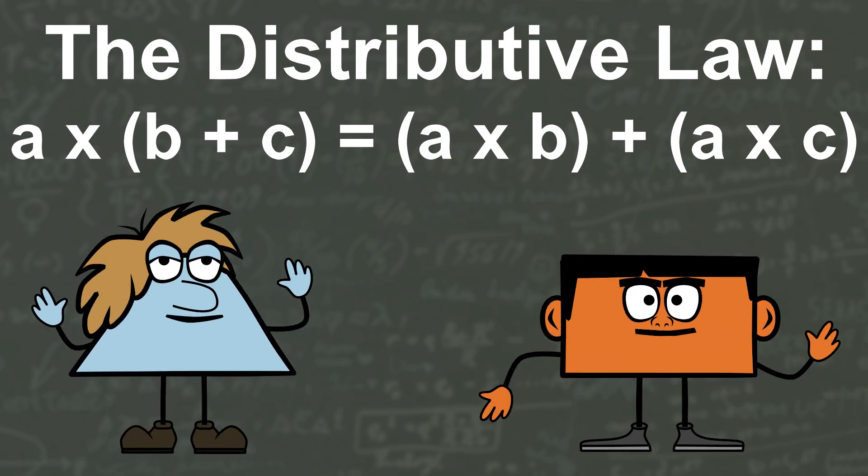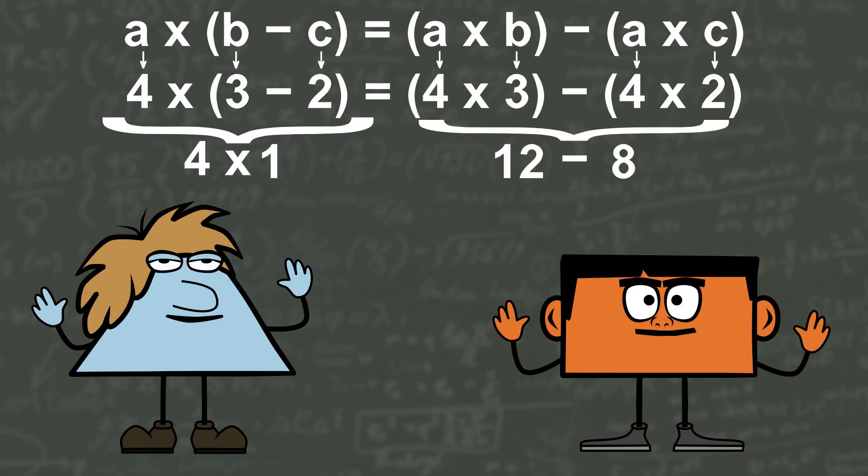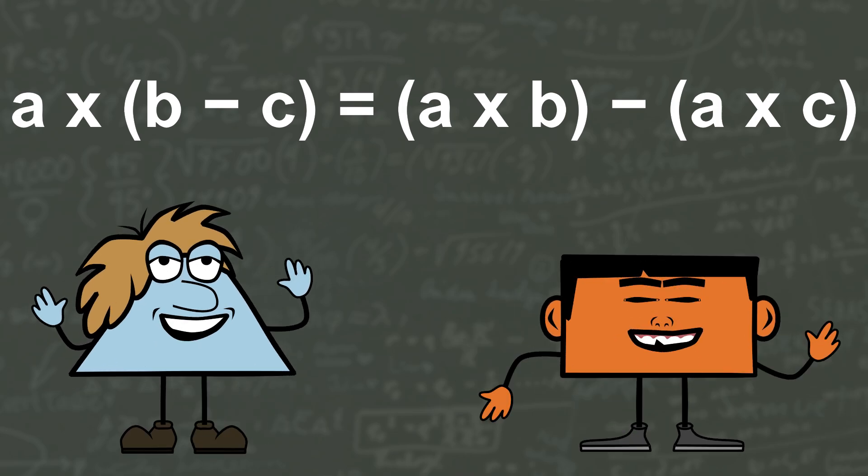If inside the brackets you subtract c from b, the distributive law still applies. It's a fact: a times brackets b minus c equals a times b minus a times c.